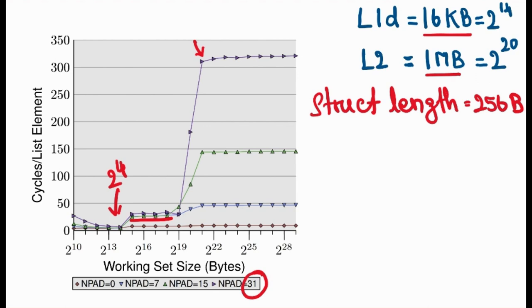But when the dataset size goes beyond 1 MB, which is at this point, the dataset cannot reside in L2 cache anymore. So every time when the CPU wants to access a new member, the data has to be fetched from the main memory. And the main memory is going to be very slow. This time, every new member access is going to take somewhere close to 350 cycles.